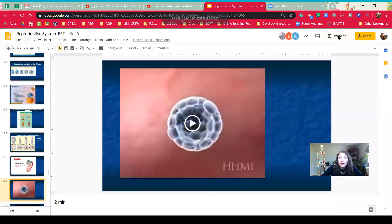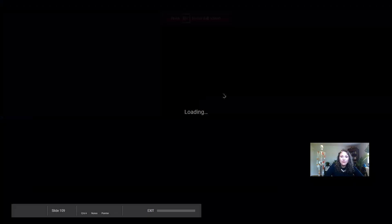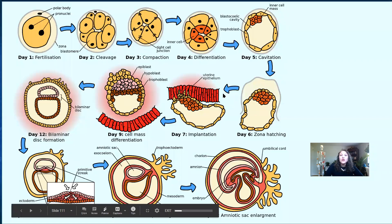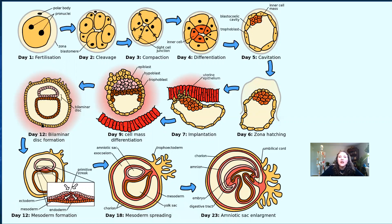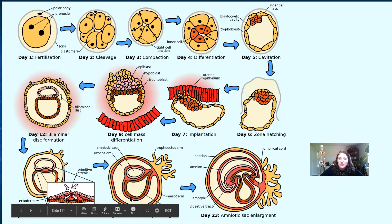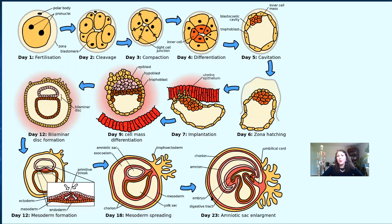Looking at this process from a developmental timeline: day one through day seven, the cell grows, divides, and creates those three different germ layers. By day seven there is implantation, and by day 18 the different layers are starting to create the embryo. By day 23 to 25 we have the development of chorionic villi, the umbilical cord folding, neurulation occurring, the amniotic sac enlarging, and an embryo starting to take shape.